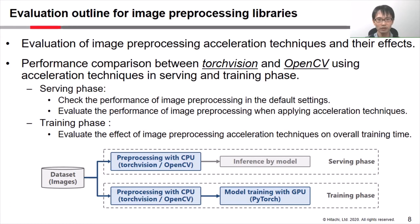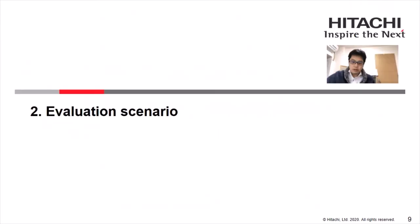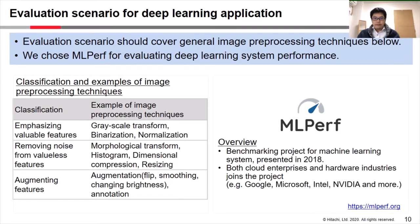Next, we are going to explain our evaluation scenario. In order to evaluate the preprocessing performance in general, we needed to find a good sample scenario. We thought that the evaluation scenario for deep learning applications should cover general image preprocessing techniques as shown in the left table, which classifies preprocessing techniques into three classes.